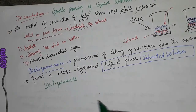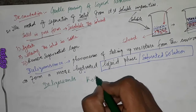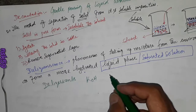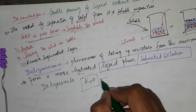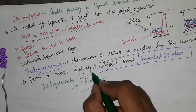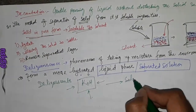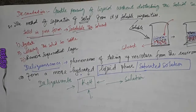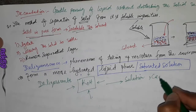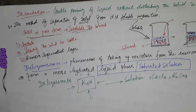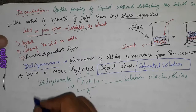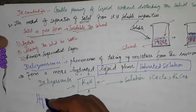For example, potassium hydroxide, when placed in the atmosphere, takes up moisture from the surroundings to form a solution. Potassium hydroxide, calcium chloride, and potassium carbonate all undergo this deliquescence process.